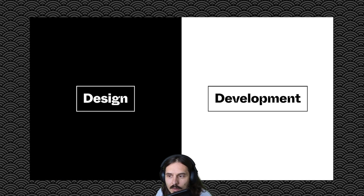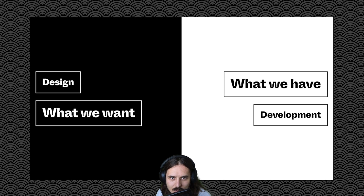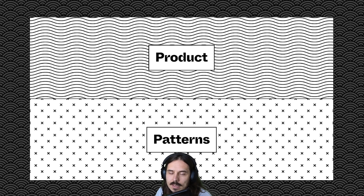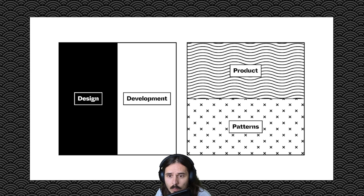Typically, when we think about design and development, we see it as two sides. Design tends to be what we want, and development is essentially what we have. I also like to think of two other hemispheres: the top being the product, the bottom being patterns. The product is where we're going; patterns are essentially how we get there.